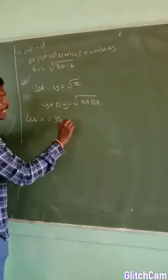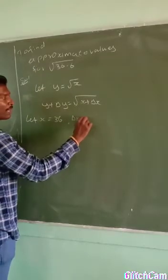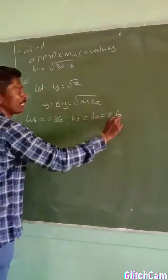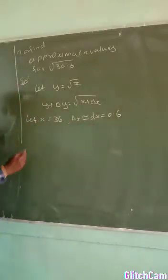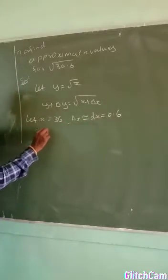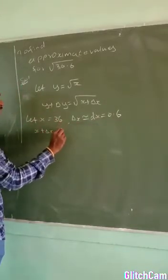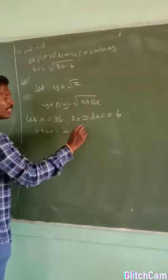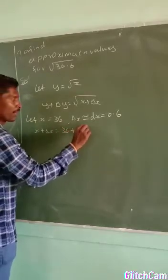Then remaining part, delta x approximately equal to dx equal to 0.6. This is the error part. Now x plus delta x equals what will come? 36 plus 0.6, it becomes 36.6.